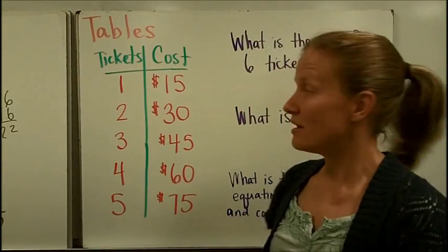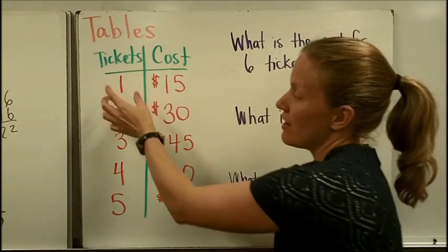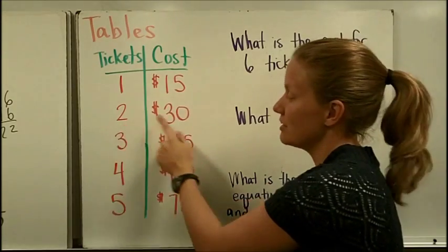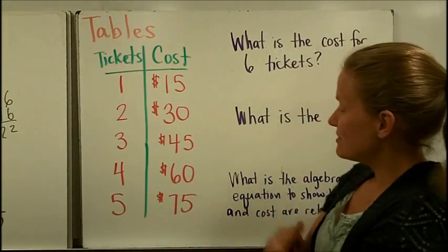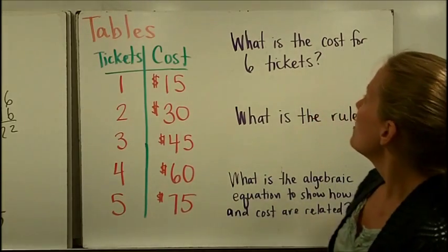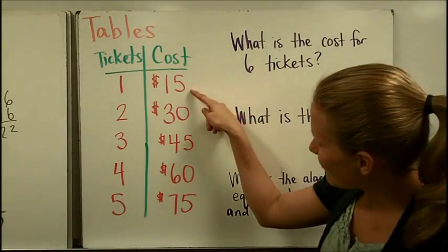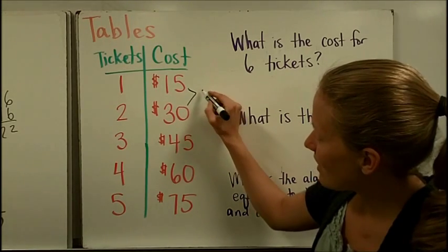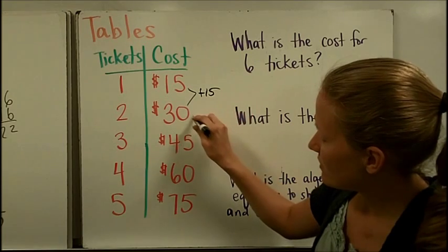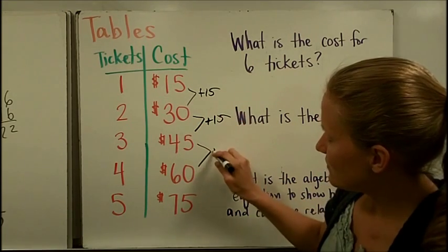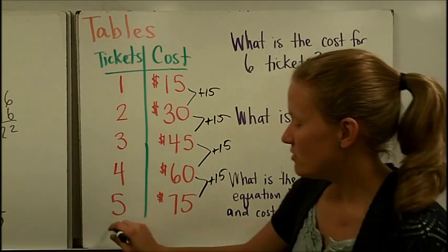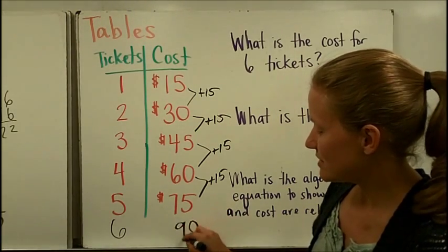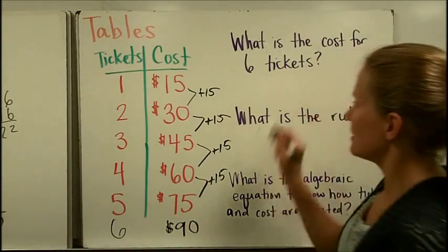Another way that we can write patterns is in a table. And we have a pattern here, let's say to go to a play, 1 ticket costs $15, 2 tickets $30, 3 tickets and so on. So we have several questions that we're going to use to analyze this table. What's the cost for 6 tickets? Well you can see a pattern happening here as you go down. We are increasing by 1 every time. And as you go from here to here, I'm adding 15 more. This would be plus 15, plus 15, plus 15. So you could think about 1 more plus 15, 75 plus 15 would give us 90. So the cost for the 6 tickets would be $90.